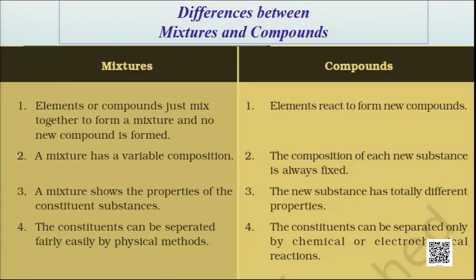Looking at the table: elements or compounds just mix together to form a mixture and no new compound is formed in case of a mixture. But when elements react and a chemical change takes place, we get a new compound. Second point: mixture has variable composition — they can be taken in any random proportion. Whereas the composition of each new substance obtained in a chemical reaction is always fixed. Third: mixture shows the properties of its constituent substances — the components never lose their properties. For example, if you dissolve sodium chloride in water, both water and sodium chloride retain their individual properties.